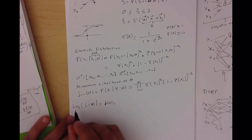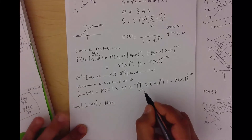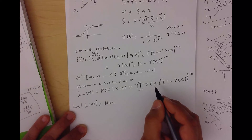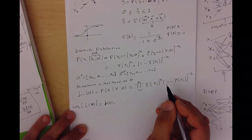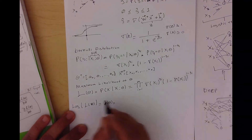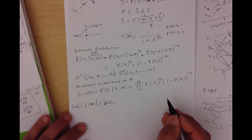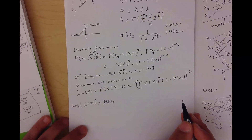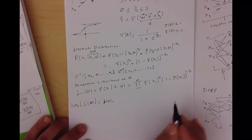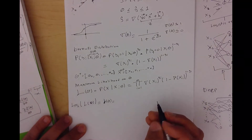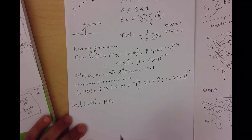We can take the log of this maximum likelihood function. The log has a nice property: it converts multiplication into a summation while keeping the one-to-one mapping from one point to another, and it is a monotonically increasing function.